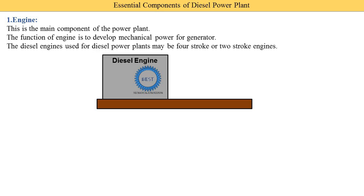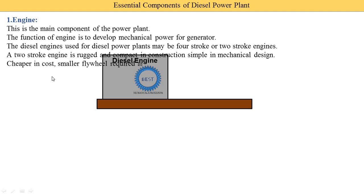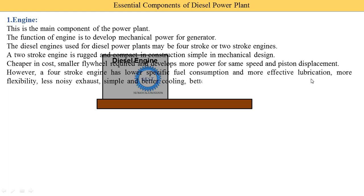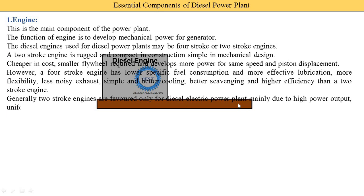Diesel engines used for diesel power plants may be four-stroke or two-stroke. Two-stroke engines are compact in construction and simple in mechanical design, cheaper in cost, require a smaller flywheel, and develop more power for the same speed compared to four-stroke engines. However, four-stroke engines have lower specific fuel consumption, more effective lubrication, more flexibility, less noise, simple and better cooling, better scavenging, and higher efficiency than two-stroke engines. We use the four-stroke engine in a diesel power plant because it has a number of advantages.